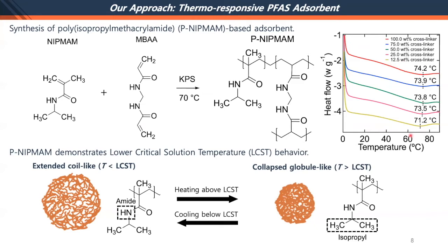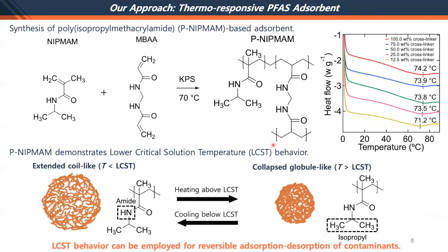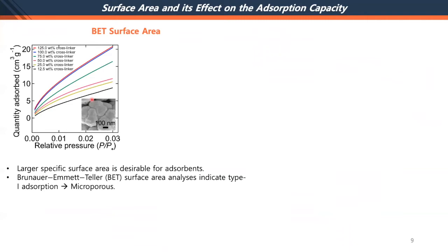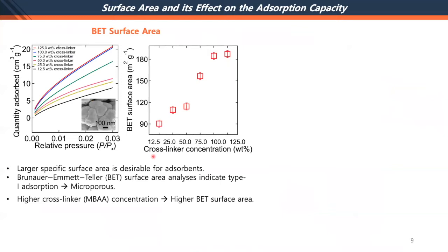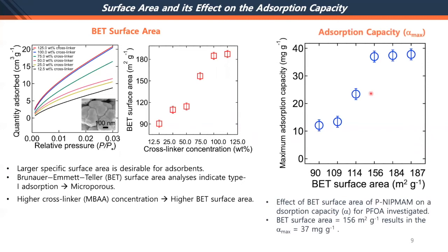The LCST behavior allows reversible absorption and desorption. Cross-linker density affects both the LCST value and the surface area of our PNIMAM absorbent. Higher cross-linker density shows higher surface area, and higher surface area shows higher absorption capacity. We also measured the maximum absorption capacity (α_max) based on surface area and found that higher surface area allows more PFAS to be adsorbed to the substrate.